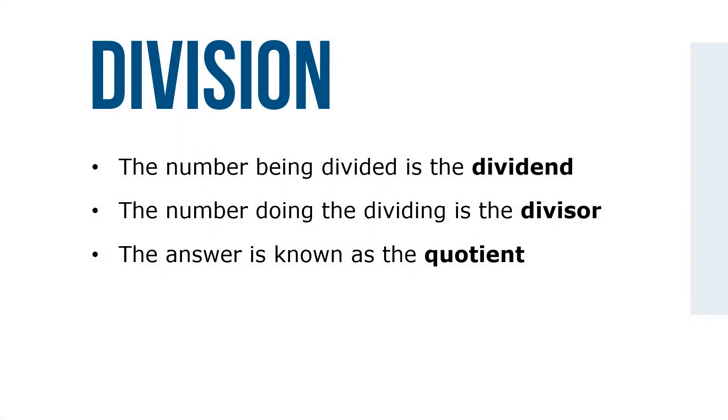The number being divided is called the dividend. The number doing the dividing is the divisor, and the answer is known as the quotient.